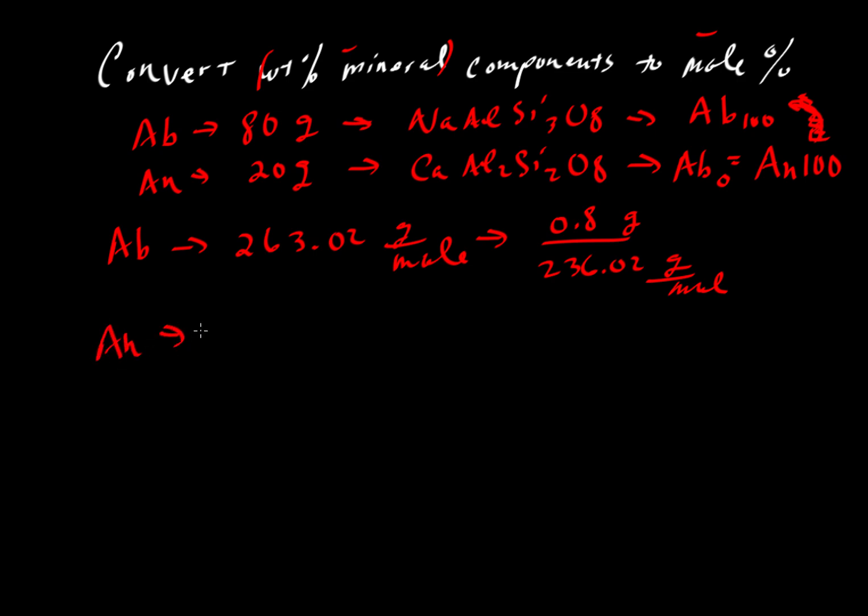For the anorthite, we'll play the same game. Anorthite has a molecular weight of 277.41 grams per mole. And so if we want the molecular proportion, not the weight proportion, but the molecular proportion, we'll take the weight, 0.2 grams or 20 grams.